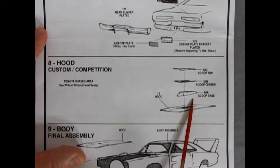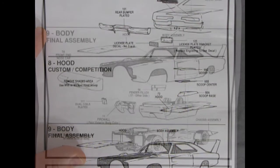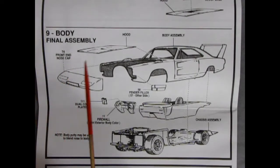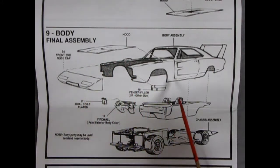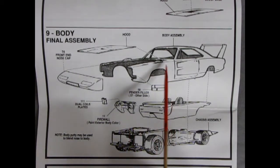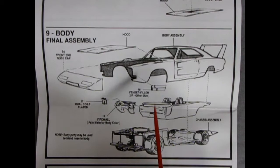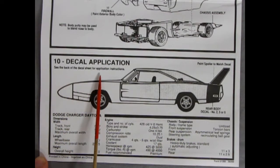Panel 8 is showing our custom competition hood. It says remove shaded area, use with or without hood scoops. You've got your hood and then the scoop base, scoop center and scoop top. Panel 9 shows our body final assembly with our sub-assembly body getting the hood on, the front nose and the fender fillers which glue along the bottom. You get dual coils underneath the hood gluing onto the firewall. The interior will pop up inside and then our chassis comes up at the end.